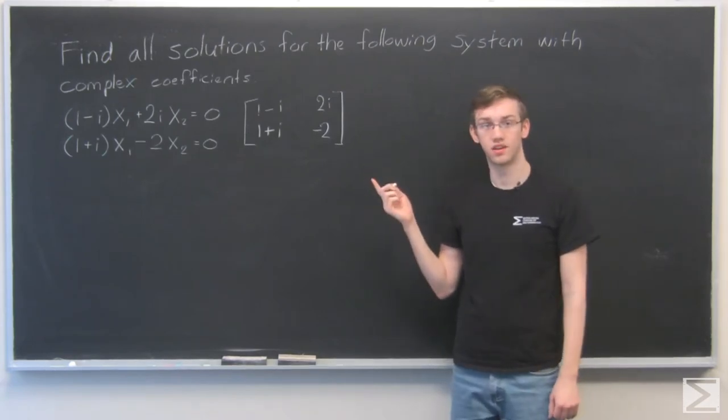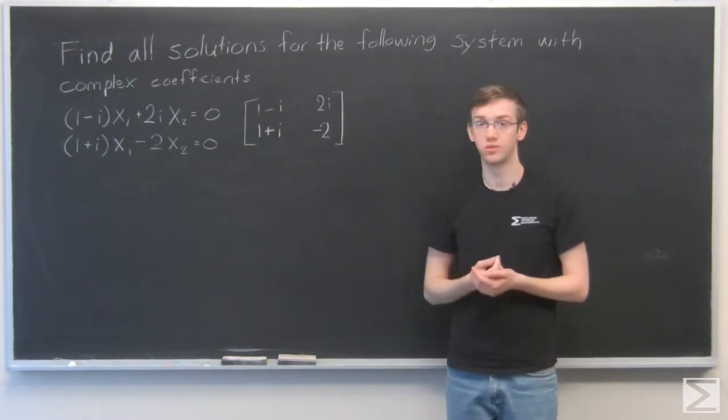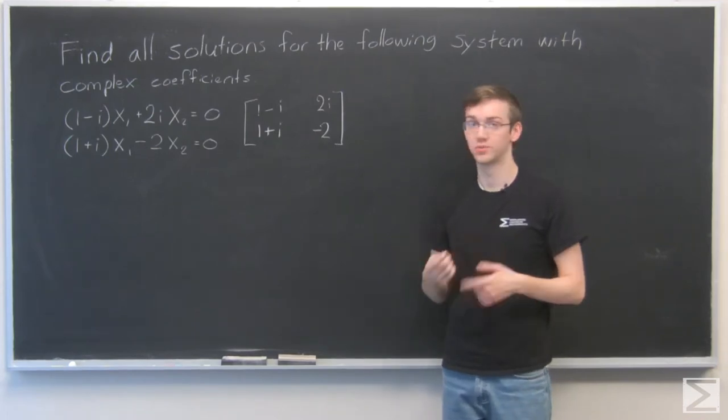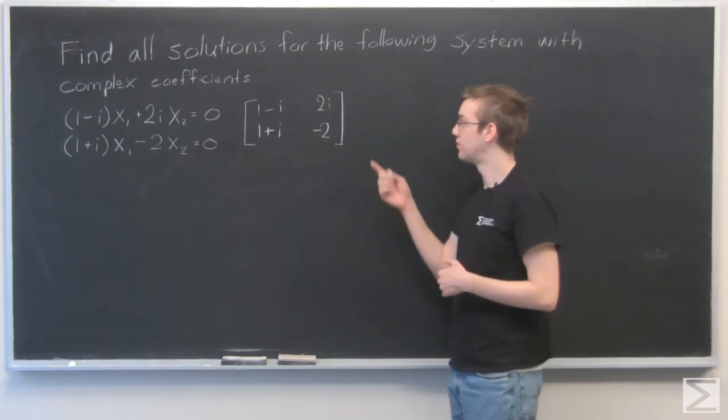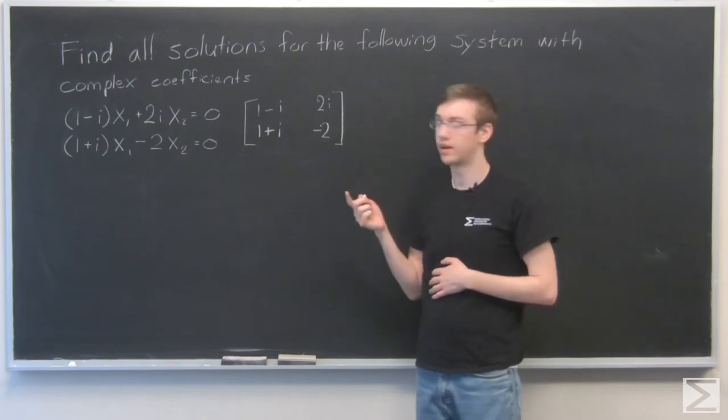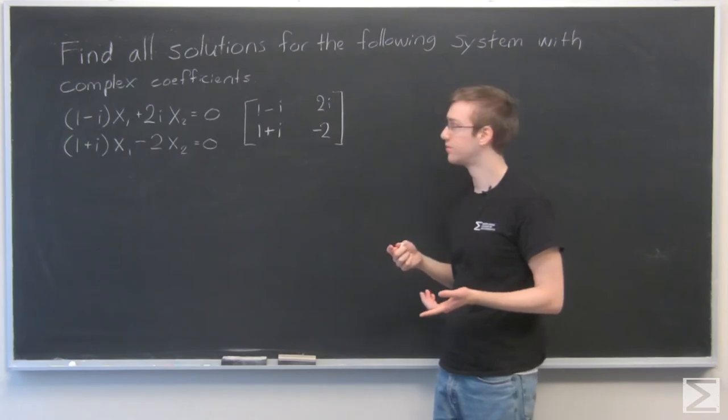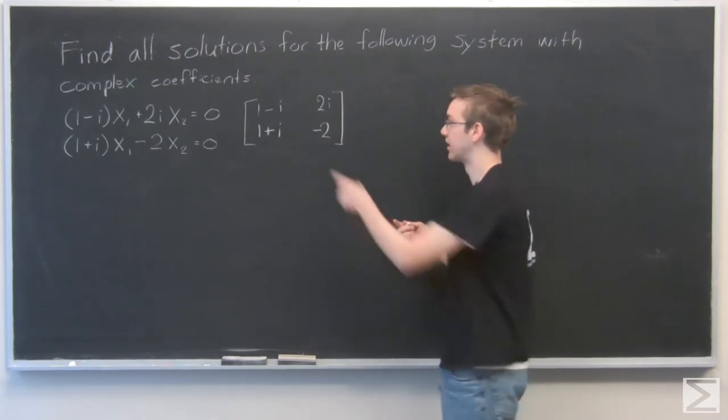Now we need to put this matrix into reduced row echelon form so we can solve for x1 and x2. I'm going to start by multiplying both the top and the bottom by the conjugates of 1 minus i and 1 plus i in order to get rid of the complex number in that spot.